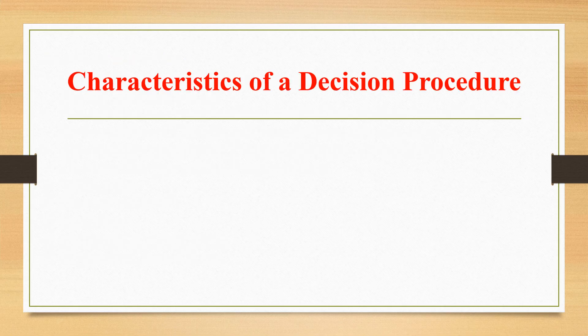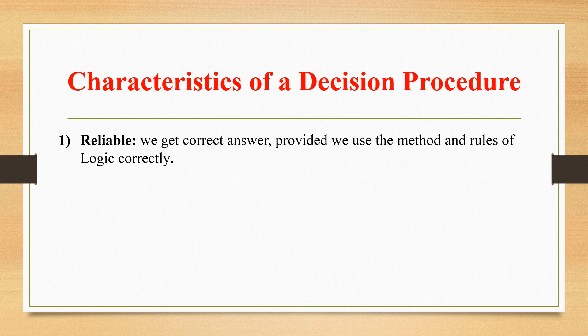Now let us understand the characteristics of a decision procedure. First, a decision procedure is reliable — that is, we get the correct answer provided we use the method and the rules of logic correctly. Whatever rules on which the decision procedure is based, those rules are to be used correctly to get the correct answer.